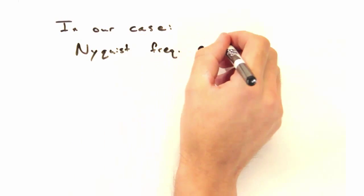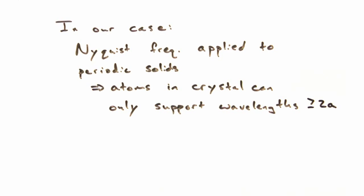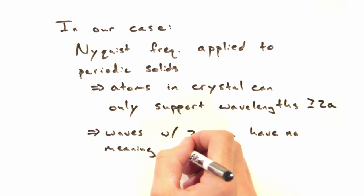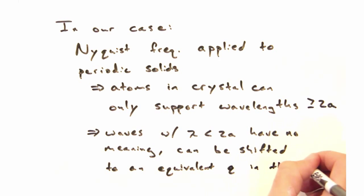Okay, so in our case, the atoms in our crystal can only support waves with wavelengths as short as 2a. Anything less than that has no physical meaning, but can be shifted into an equivalent q vector in the first Brillouin zone, where it does have meaning.